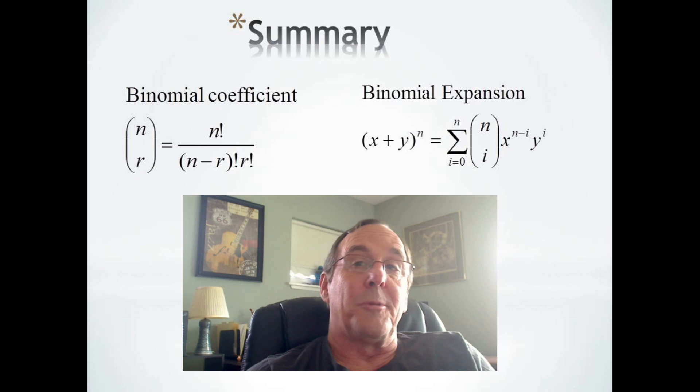Our general formula for the binomial expansion is the sum from 0 to n of n choose i times x to the n minus i times y to the i.